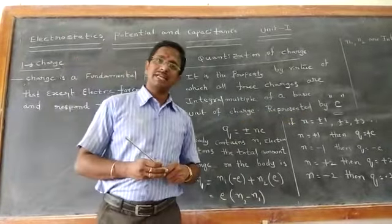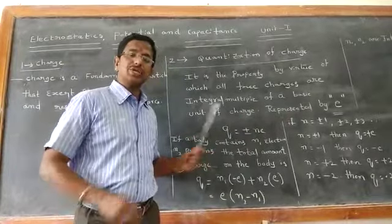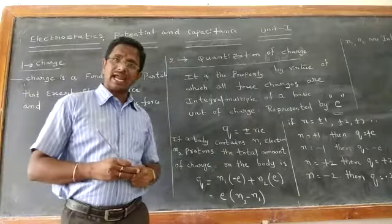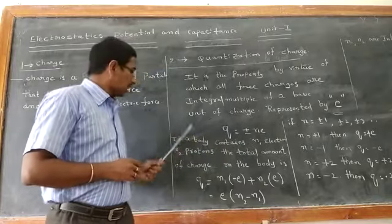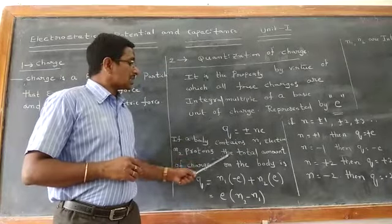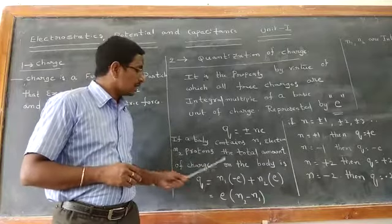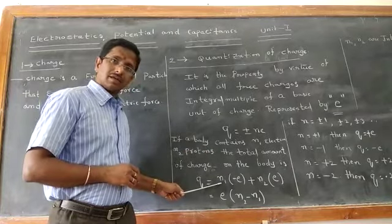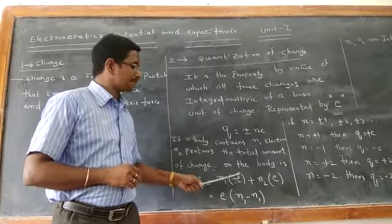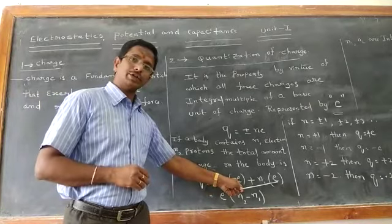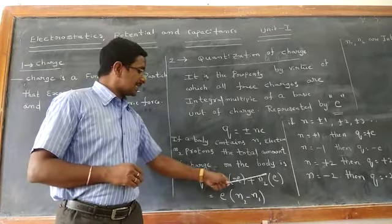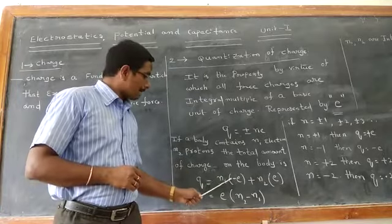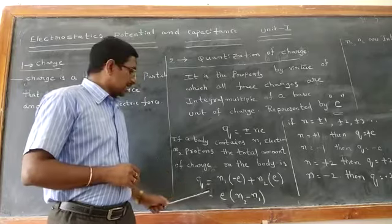According to the mathematical definition, Q is equal to plus or minus NE. Now, if a body contains N1 electrons and N2 protons, the total amount of charge on the body is Q = N1 × (−E) + N2 × (+E), which equals E(N2 − N1). So N2 minus N1 gives the total charge.